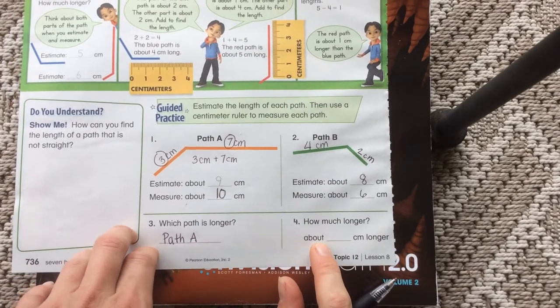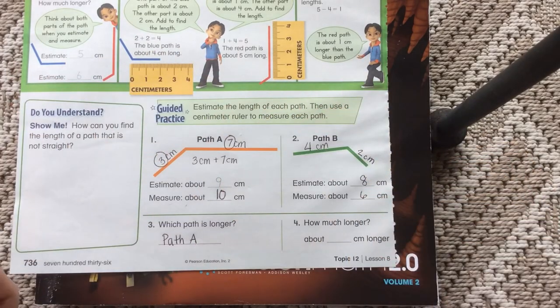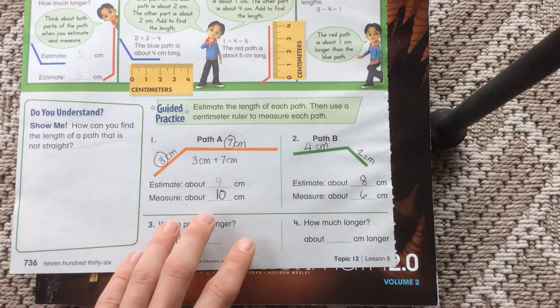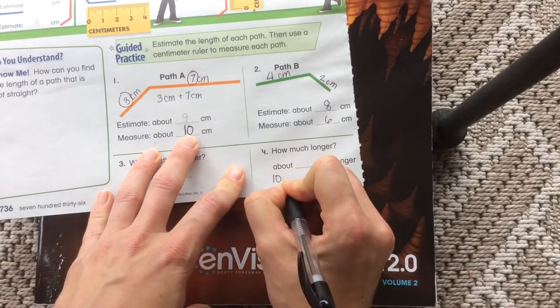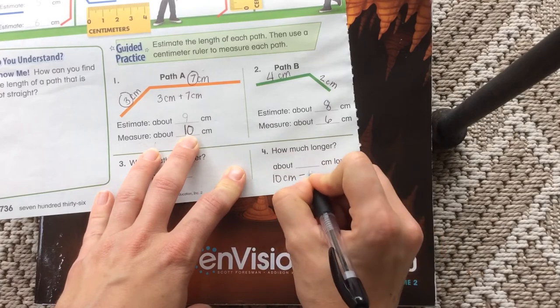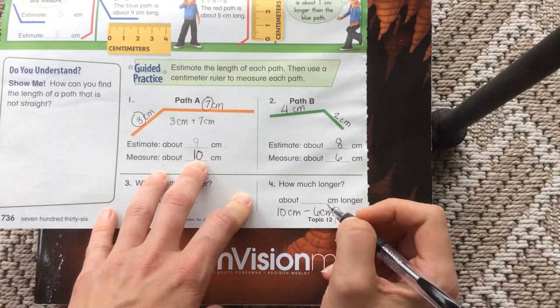When it says how much longer, you are going to need to compare. When we compare, we're not putting things together, we are subtracting. So I'm going to do 10 centimeters minus 6 centimeters. And that's going to get me how much longer the paths were.